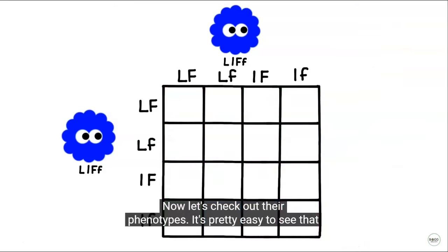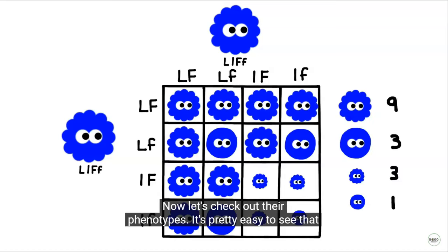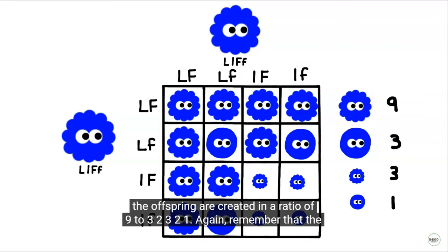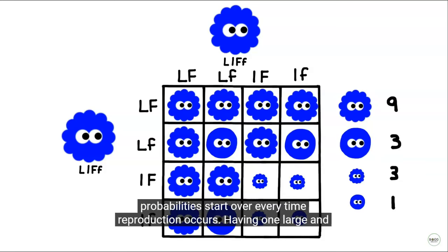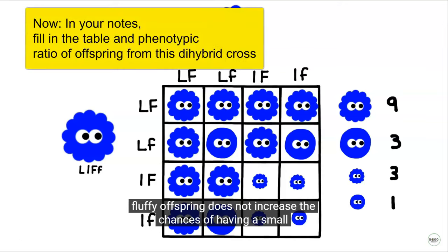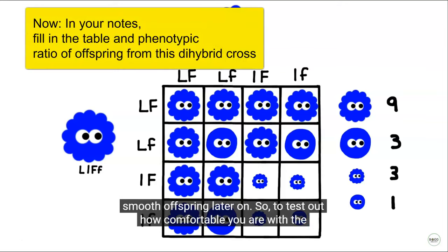Now let's check out their phenotypes. It's pretty easy to see that the most common phenotype is for the offspring to be large and fluffy. In fact, the offspring are created in a ratio of nine to three to three to one. Remember that the probabilities start over every time reproduction occurs — having one large and fluffy offspring does not increase the chances of having a small and smooth offspring later on.